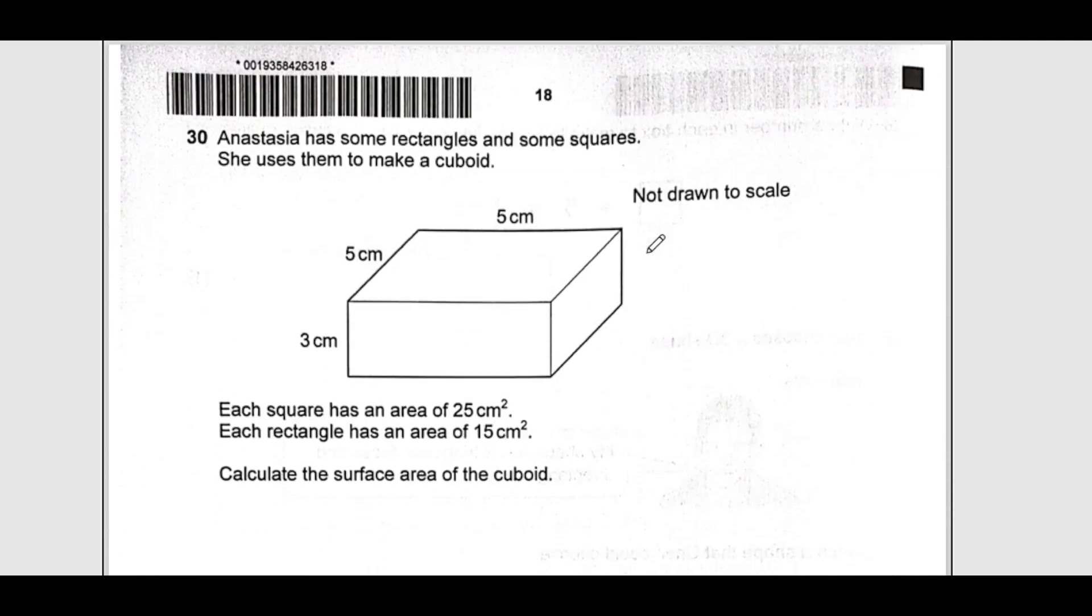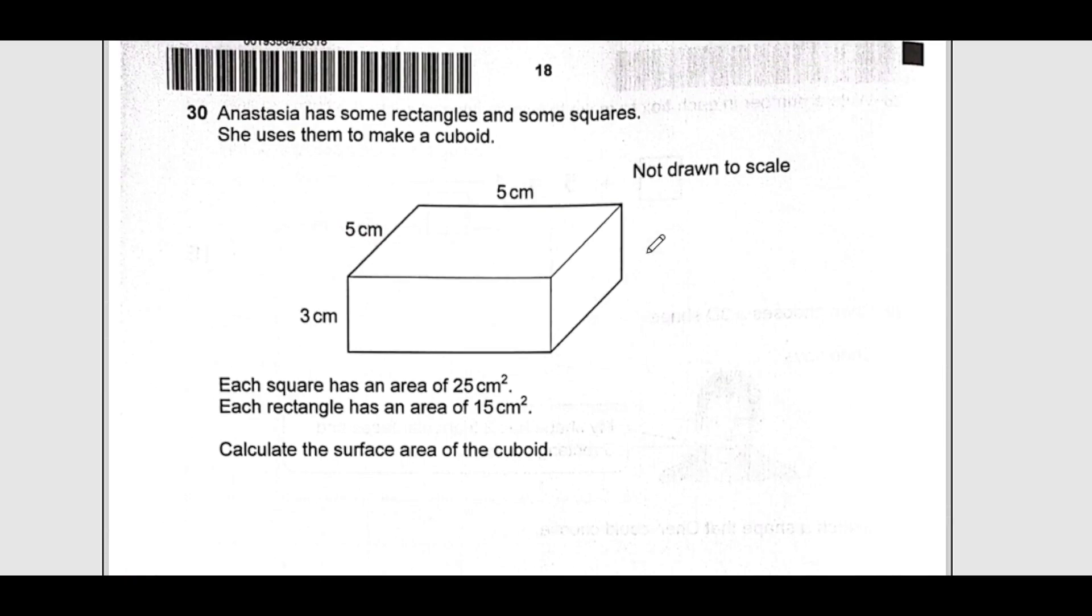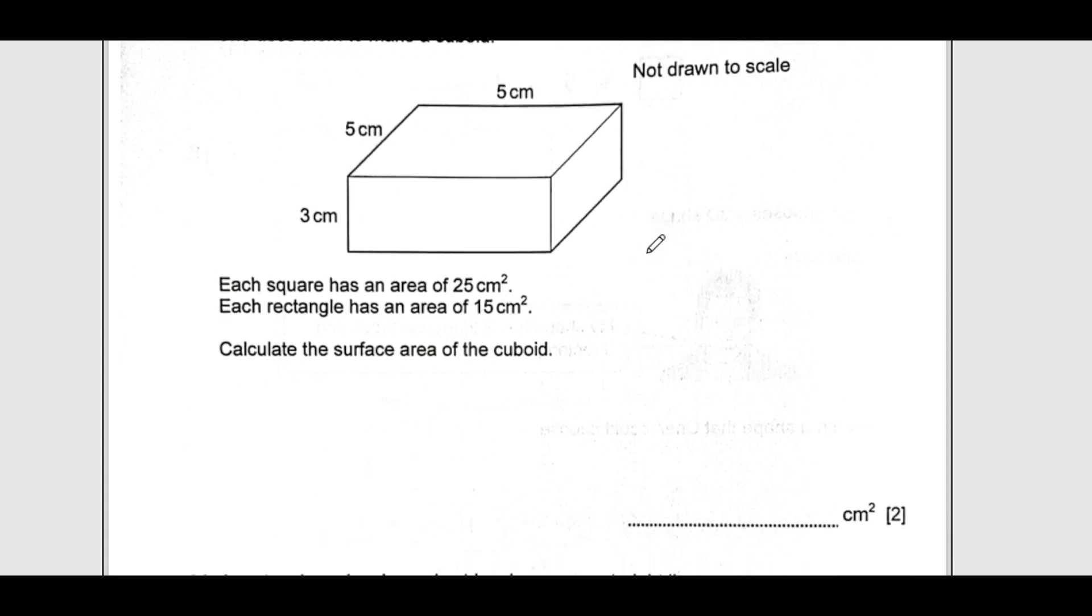Number 30, Anastasia has some rectangles and some squares. She uses them to make a cuboid. Each square has an area of 25, each rectangle has an area of 15. So this area is 15 and this area is 25. Calculate the surface area. As we have the length, width, and height, we can easily do the calculation. Length is 5, width is 5, and height is 3. Surface area is 2 times the formula: 2 times length times width plus width times height plus height times length. So 2 into 5 times 5 plus 5 times 3 plus 3 times 5. This is 2 into 25 plus 15 plus 15. So 2 times 55 which is 110 square centimeters.